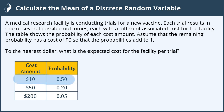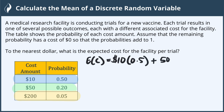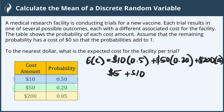We're going to multiply across each row, and we're going to add the result. So the expected cost is going to be $10 times the probability of 0.5, plus $50 times the probability of 0.2, plus $200 times the probability of 0.05. So this is $5 plus $10 plus another $10. So the expected cost per trial is $25.